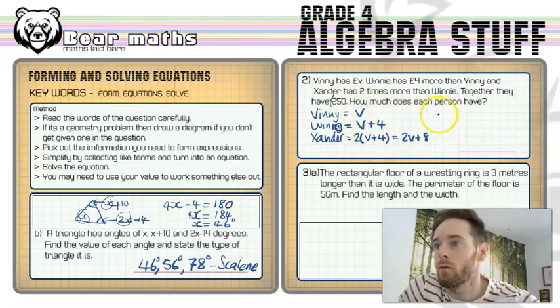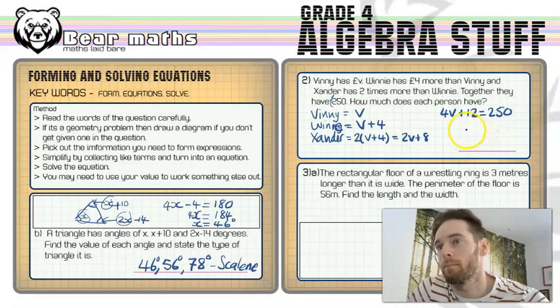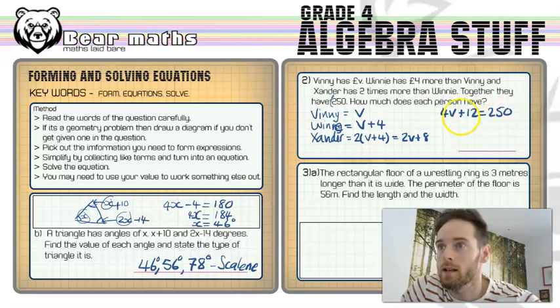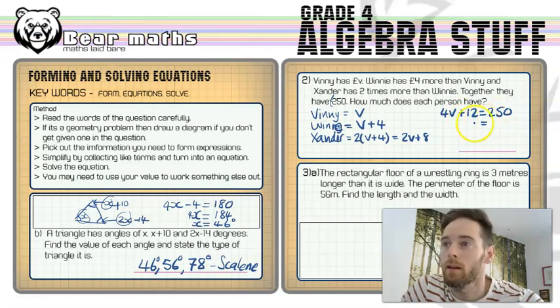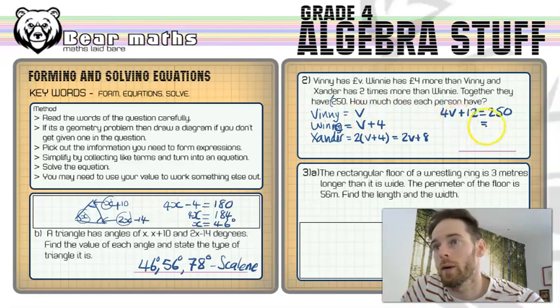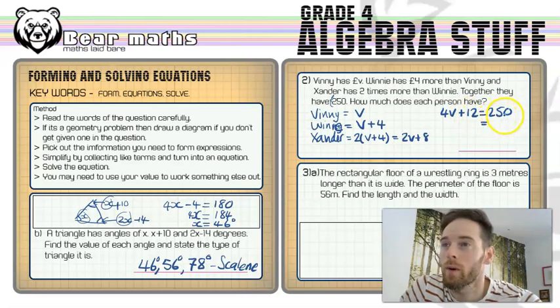So I've got 2v plus 8, I've got v plus 4 and I've got v pounds. And all of those expressions add up to this 250 pounds. So I've got 1, 2, 3, 4 v's. So 4v, and then plus 4 and 8 together, add 4 and 8 together and you've got 12. And that equals the 250 pounds that these three people have got. So if we take away 12 from both sides, then we divide them by 4. We're going to find out what Vinny's got, v pounds.